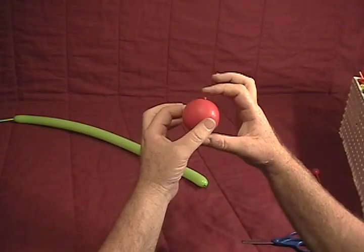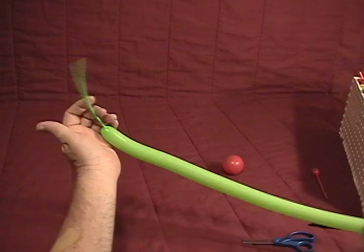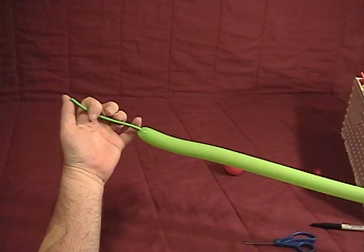Cut the nozzle end off very close to it. We've got a lime green 160 that I've inflated leaving about a five and a half to six inch tail.